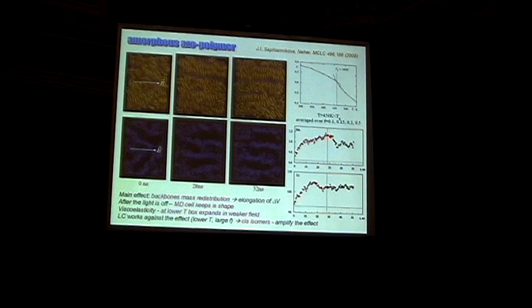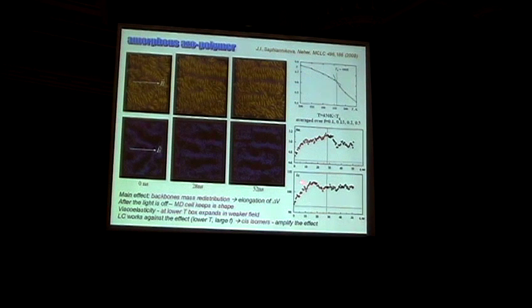And we can see this in the distribution of the backbone's radius of gyration below the field and after, and also the shape of the box stays constant.